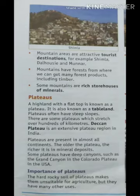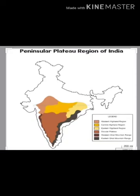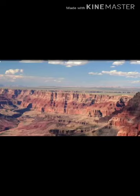You can look at the picture of a plateau in your book. There are some plateaus which stretch over hundreds of kilometers. We also live in a plateau — Renukut is a plateau land. The Deccan Plateau is an extensive plateau region in India, present in almost all continents. The older the plateau, the richer it is in mineral deposits. Some plateaus have deep canyons — such as the Grand Canyon in the Colorado Plateau in the USA — meaning a deep valley with steep rocky sides. You can also see this picture of the plateaus of India, where the dark brown color is the Deccan Plateau.